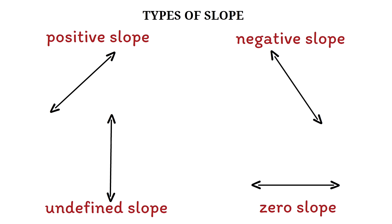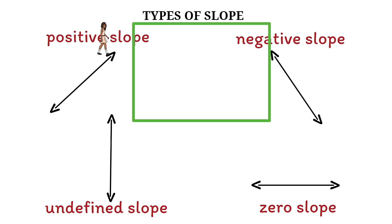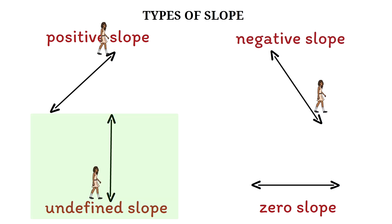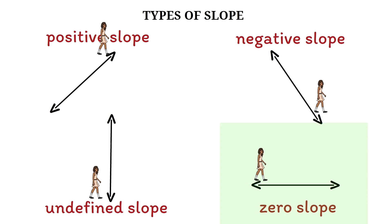To remember this, I use this technique. Assuming you are moving from left to right: if you climb, it is a positive slope. If you descend, it is a negative slope. If your way is blocked because you cannot move forward, it is undefined — like a wall preventing you from going forward. And if your path is completely flat with no change, then it is a zero slope.